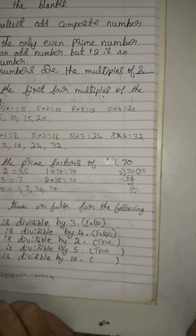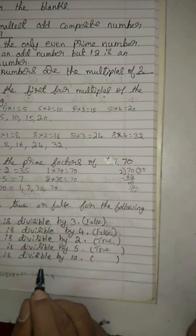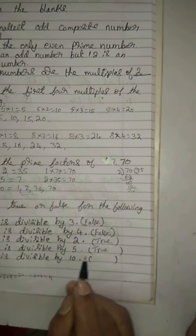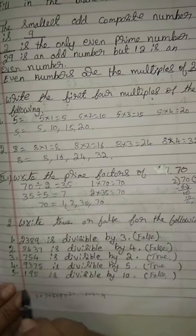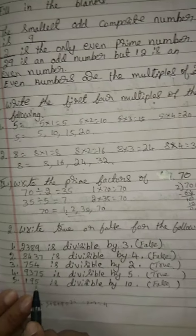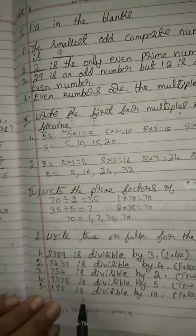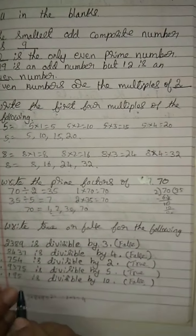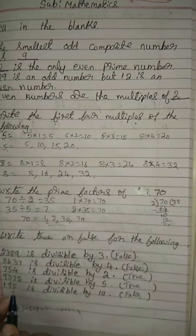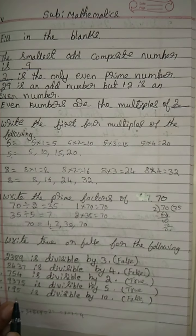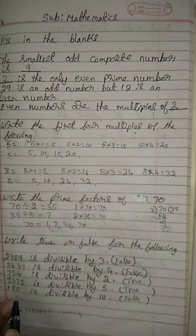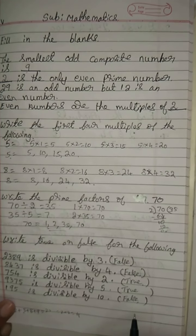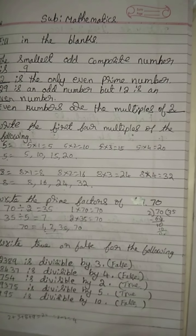195 is divisible by 10 — no, false. Why, children? Because for divisibility by 10, in the 1's place it must have 0. So here 5 is there. So it is not divisible by 10.